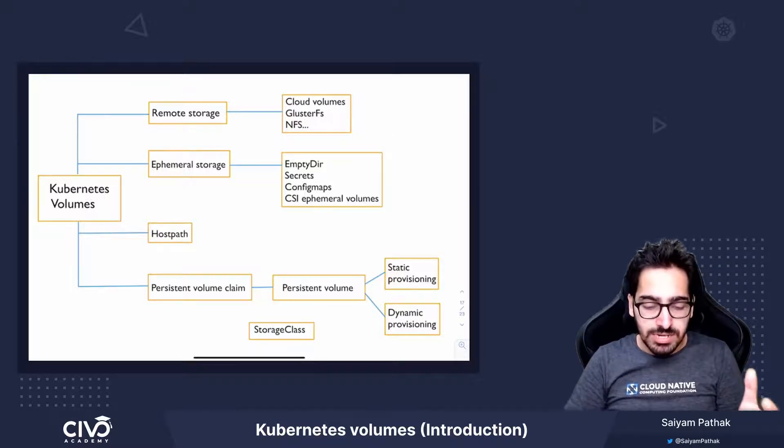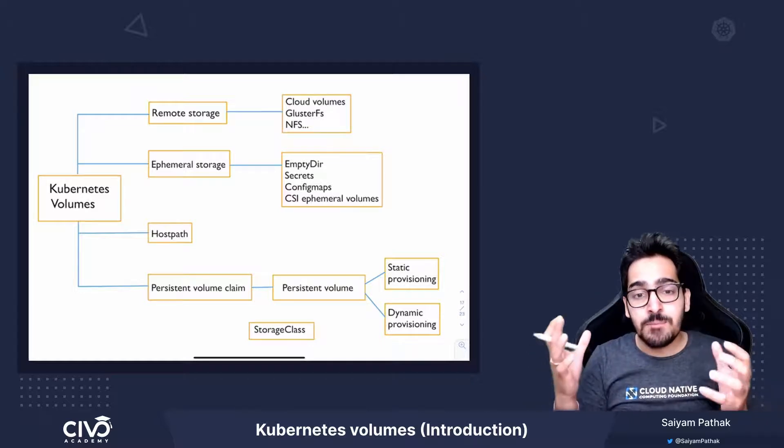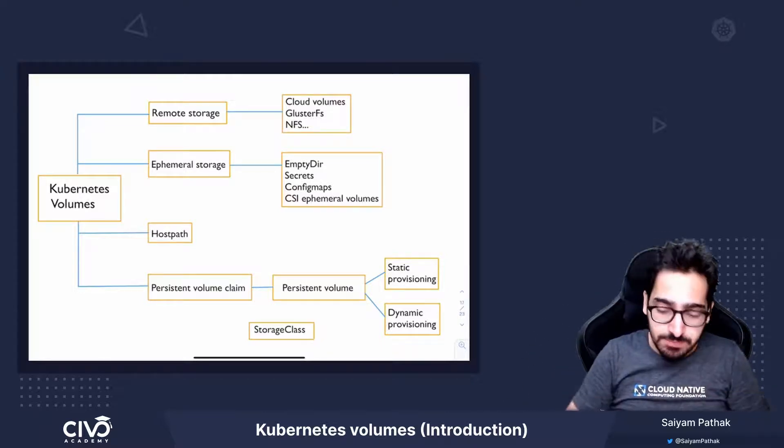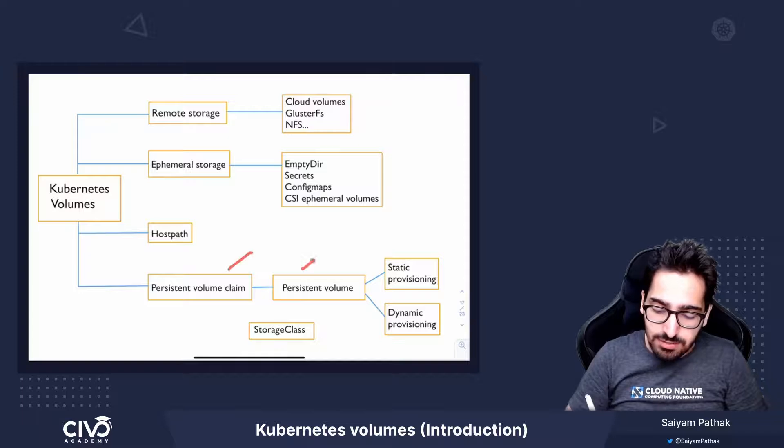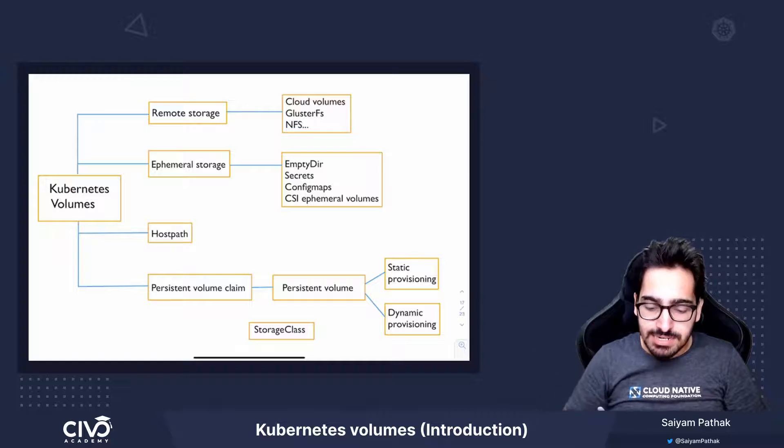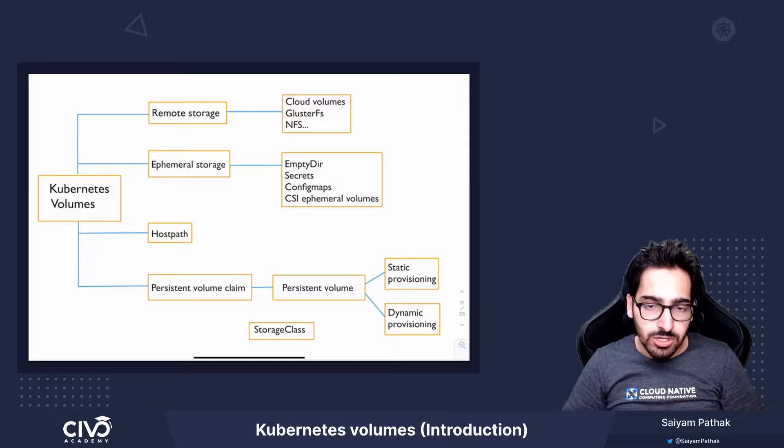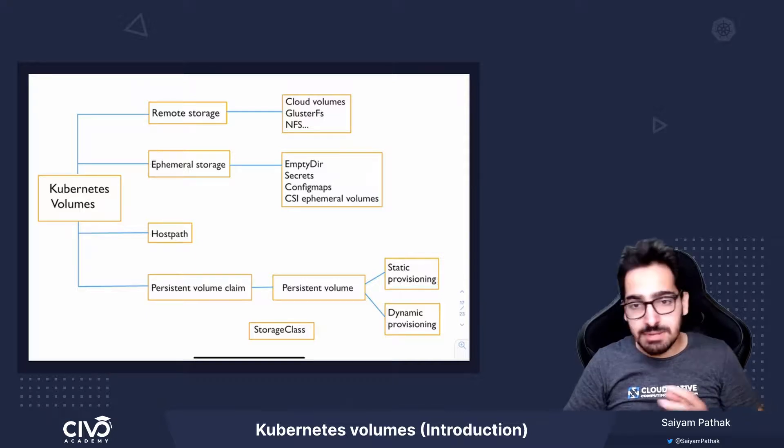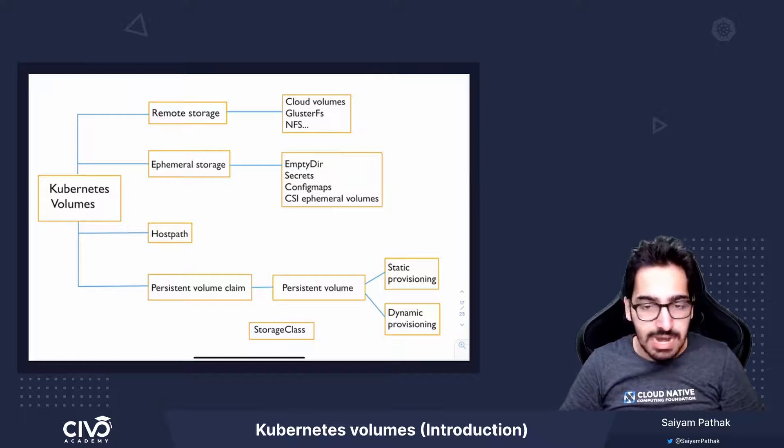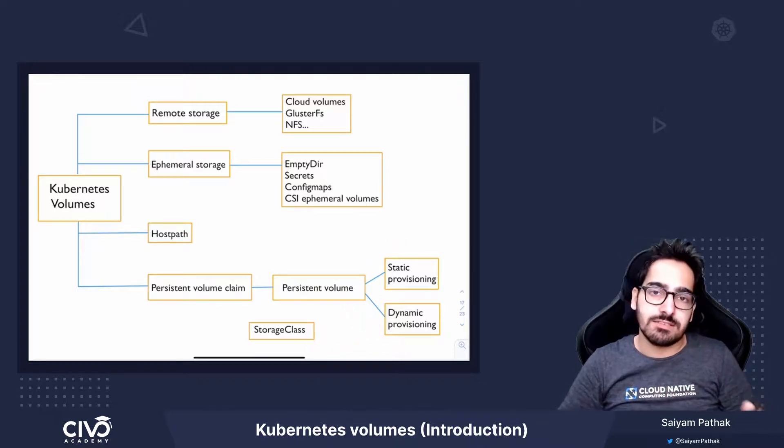Next comes the most commonly used one, which is persistent volume claim to persist the data in Kubernetes. These are separate Kubernetes objects. The persistent volume claim is the volume plugin. What it does is it talks to persistent volume and claims that persistent volume. Persistent volume can be provisioned by the admin in a static way or there can be dynamic provisioning based on the storage class.